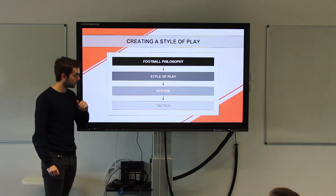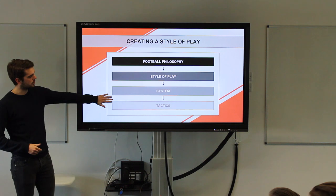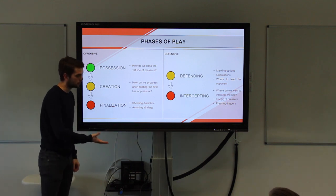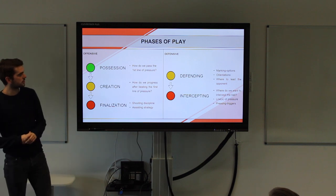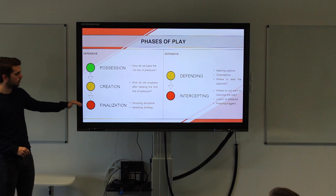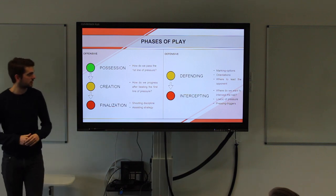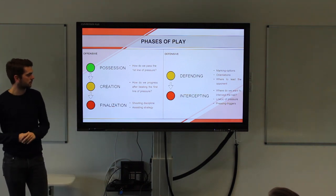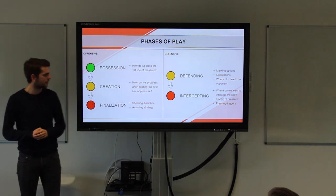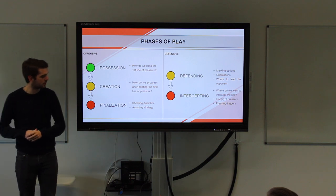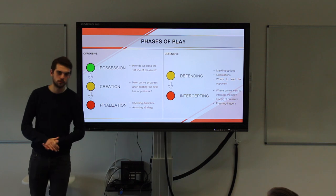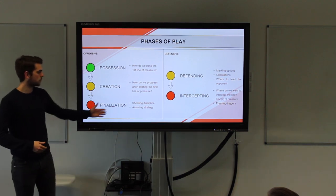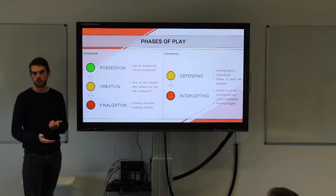What I'm mainly going to talk about today is style of play. But firstly I want to make some things clear about the phases of play and how I see and analyse football. In the offensive phases I separate between phase one, phase two, and phase three. The first phase is the possession phase — mainly when our central defenders have the ball — it's how we pass the first line of pressure. The second phase is how we progress after defeating the first line of pressure. Then you have the finalisation part, phase three — that is mainly about what I call shooting discipline: where do we want to take shots from, when do we gamble the ball, what is our system strategy — is it through balls, is it crosses, what kind of crosses.